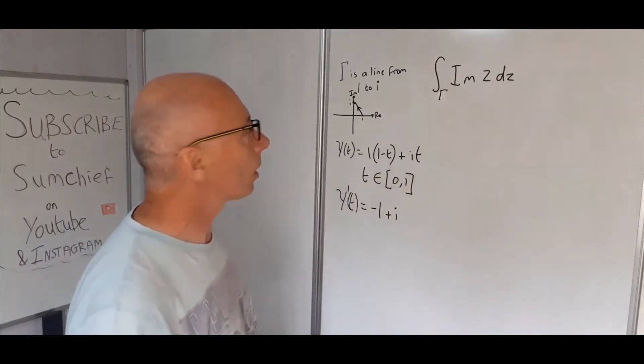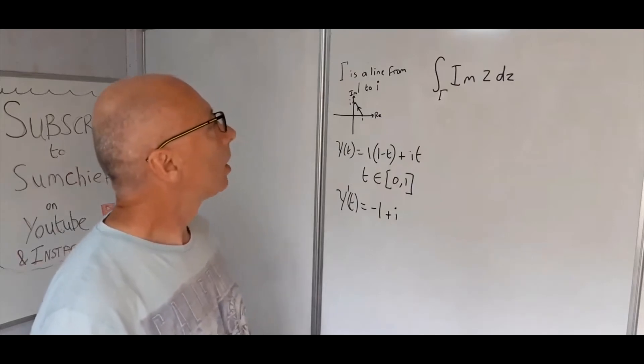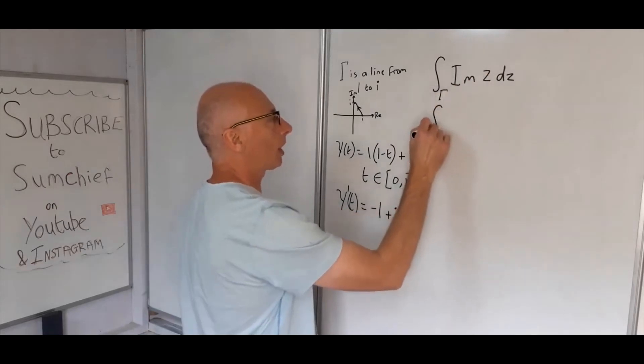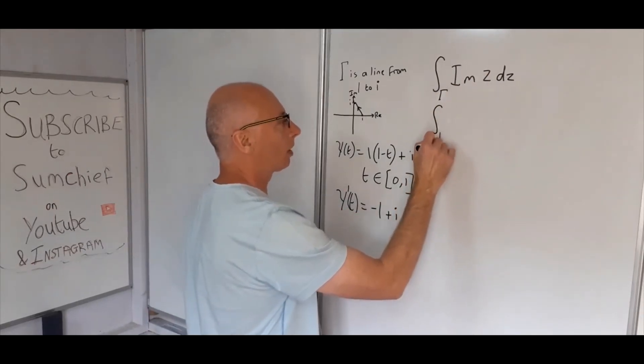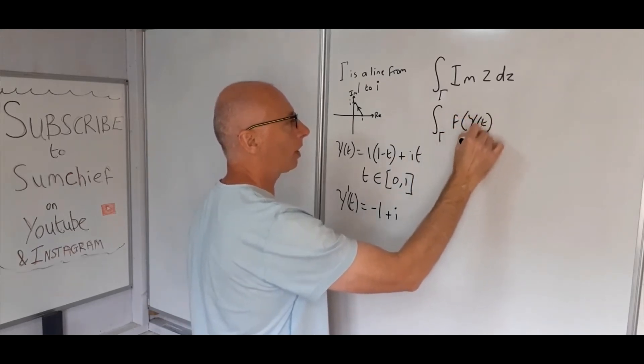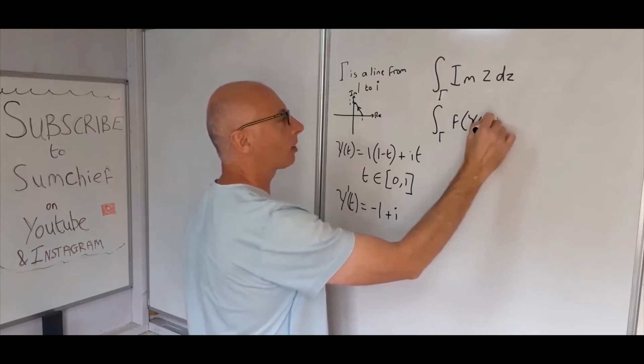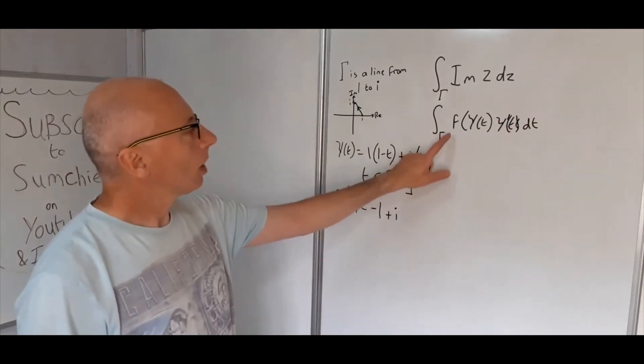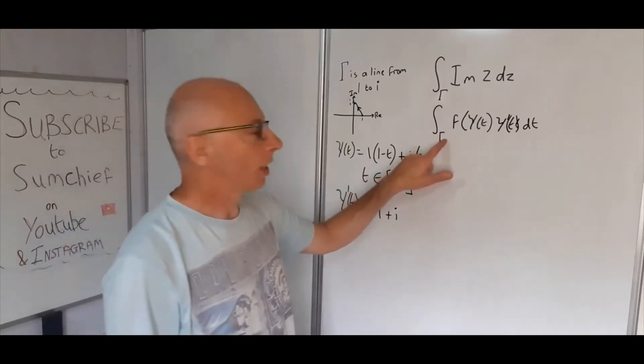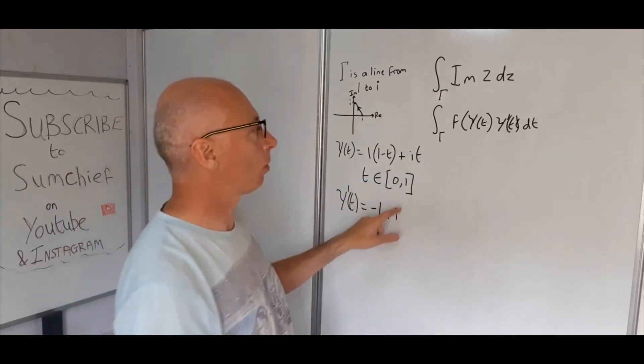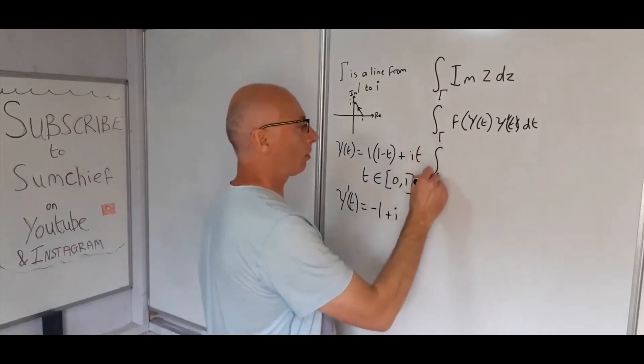So the contour integral - what we end up with now is the integral in gamma of f(gamma(t)) multiplied by the derivative of gamma(t) dt, so now we're in the t-world. Our parameters of integration are where the ranges of t are, and we know that t goes from 0 to 1.